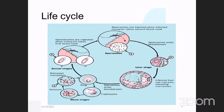Within the body of the female Anopheles mosquito, the gametocytes multiply and form oocysts, which undergo further development into sporozoites that reach the mosquito's saliva. During a subsequent bite, the sporozoites are injected into a human, completing the life cycle. This is basically the summary of the life cycle of malaria.